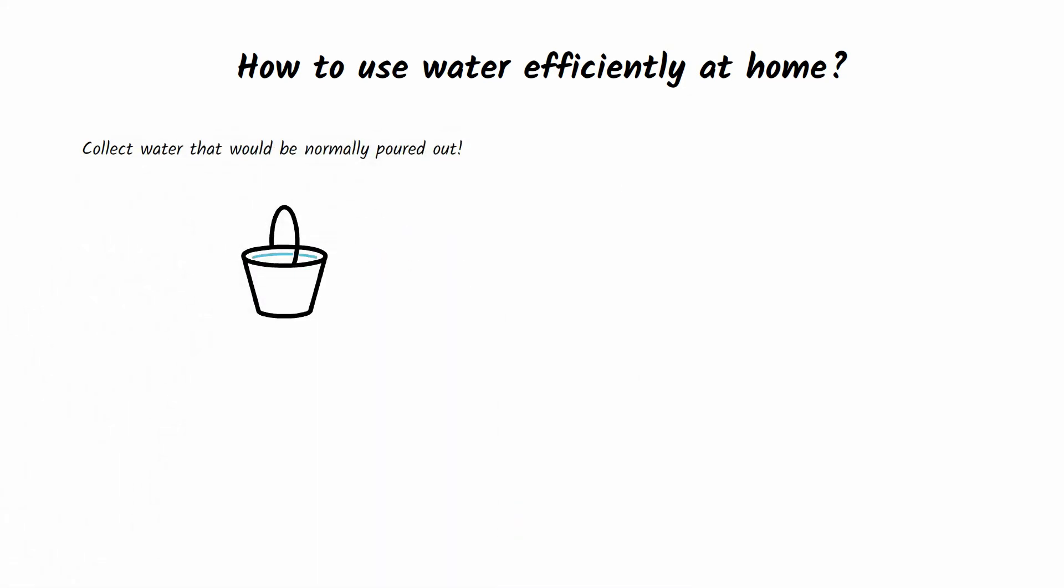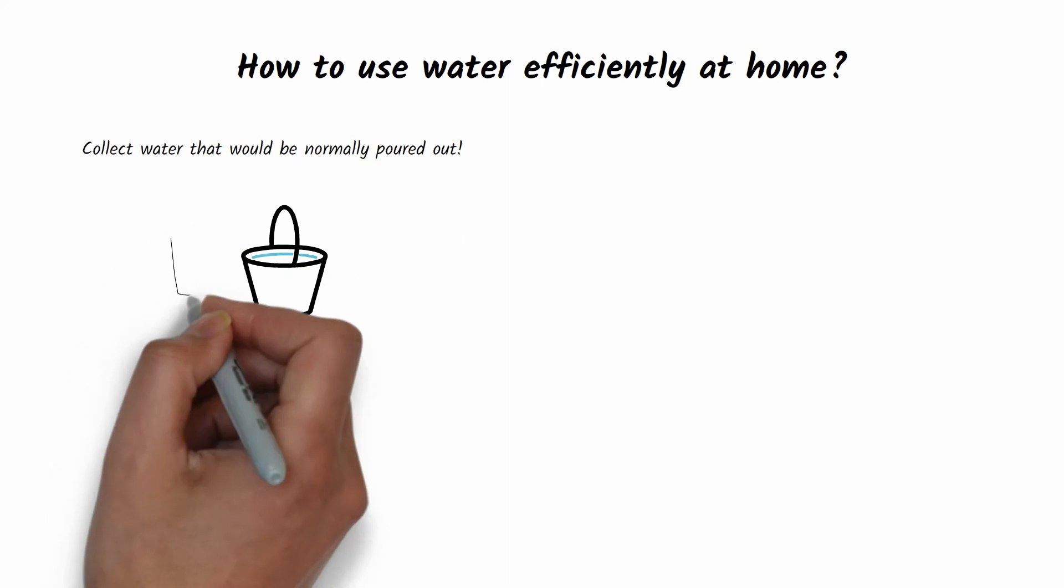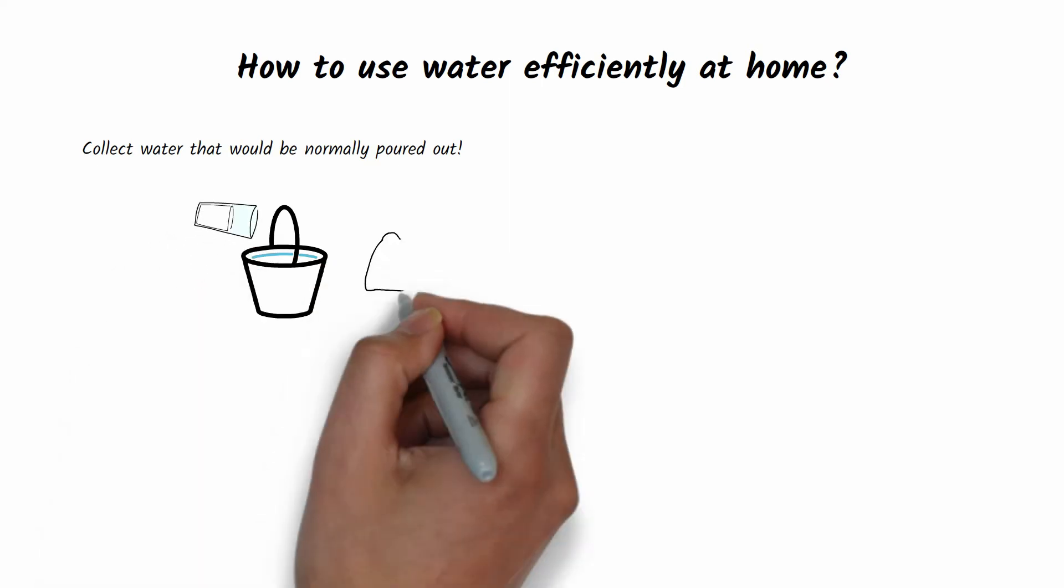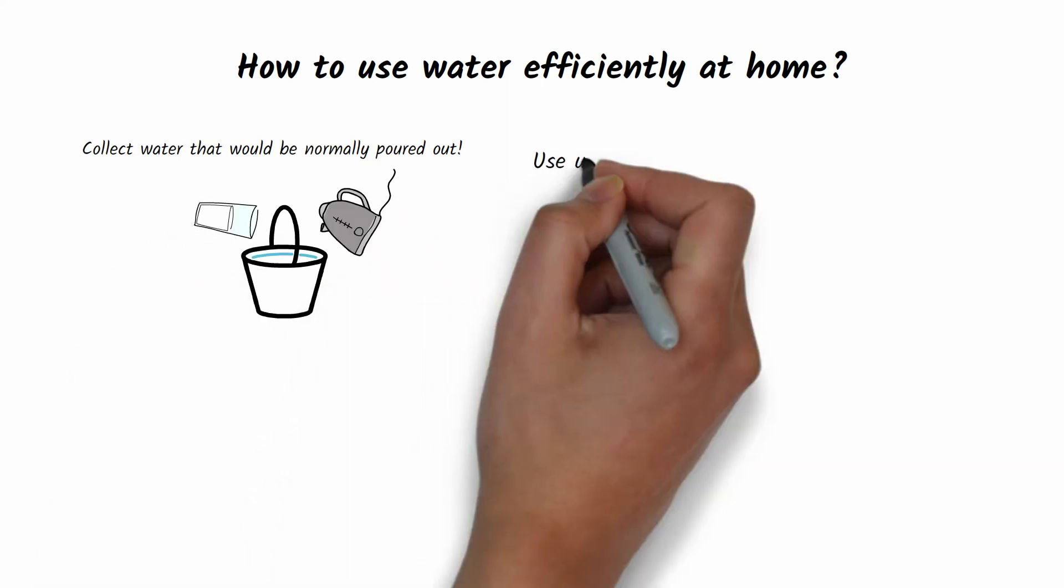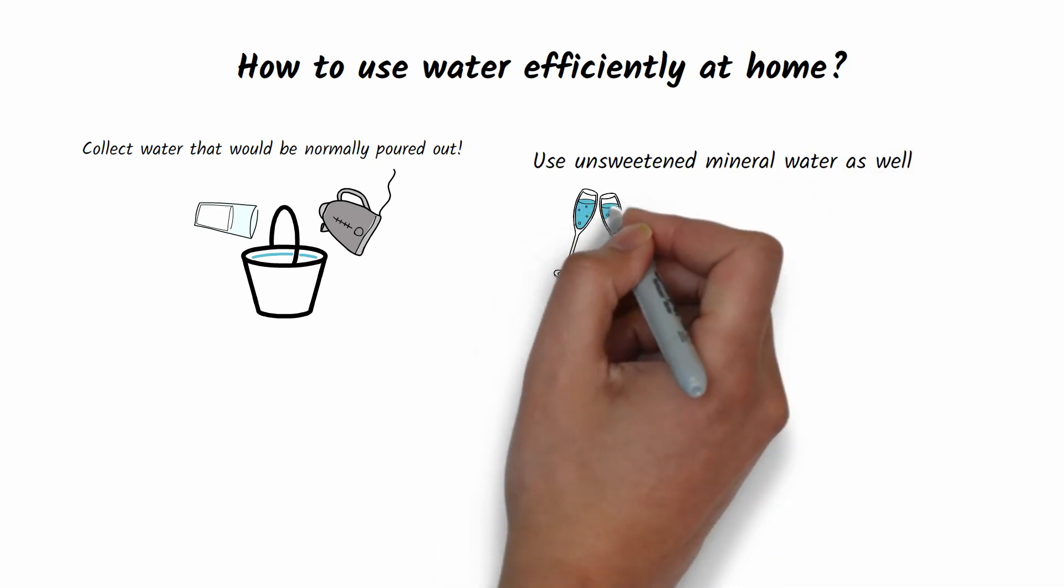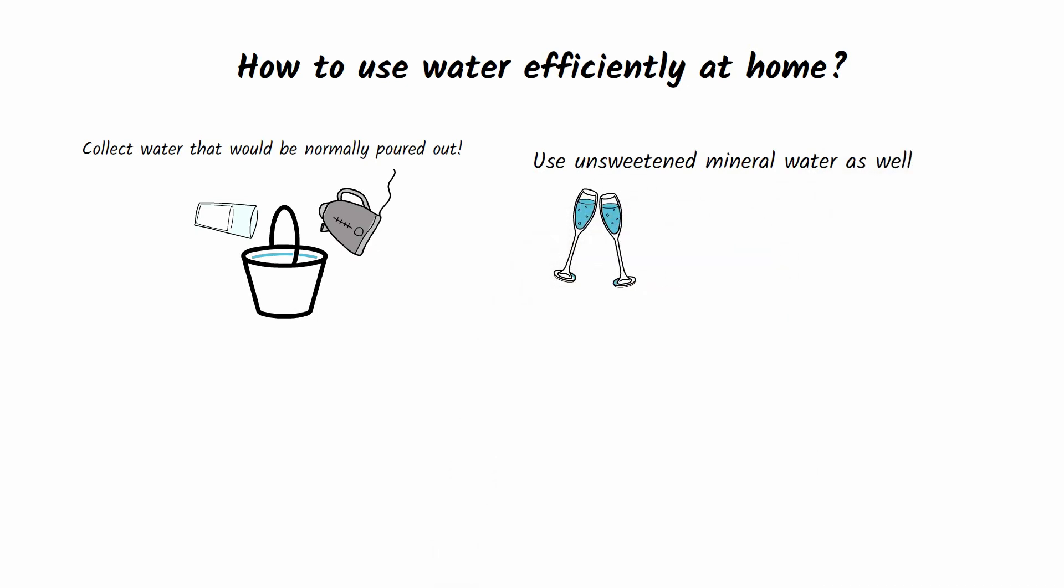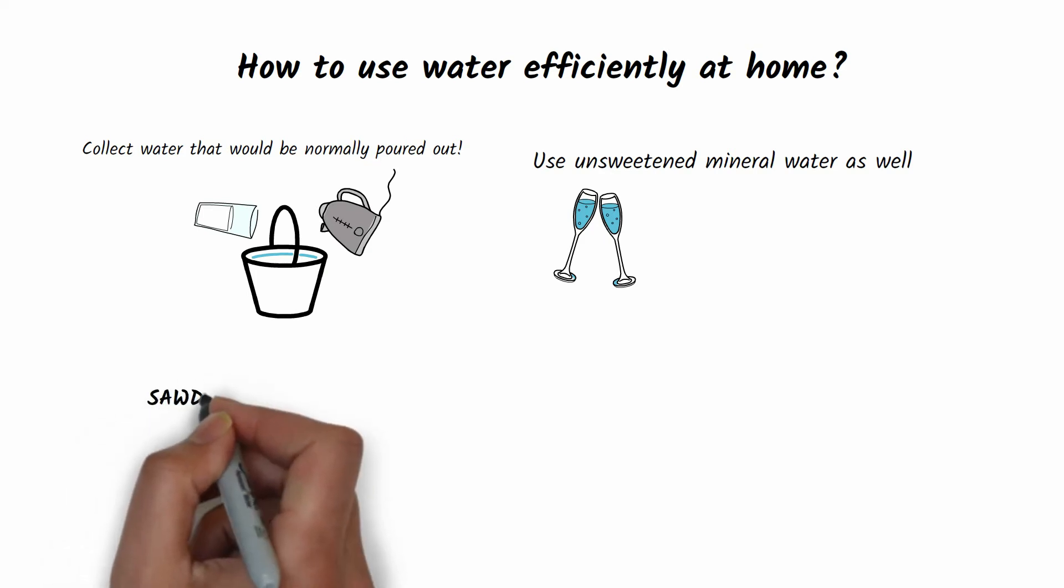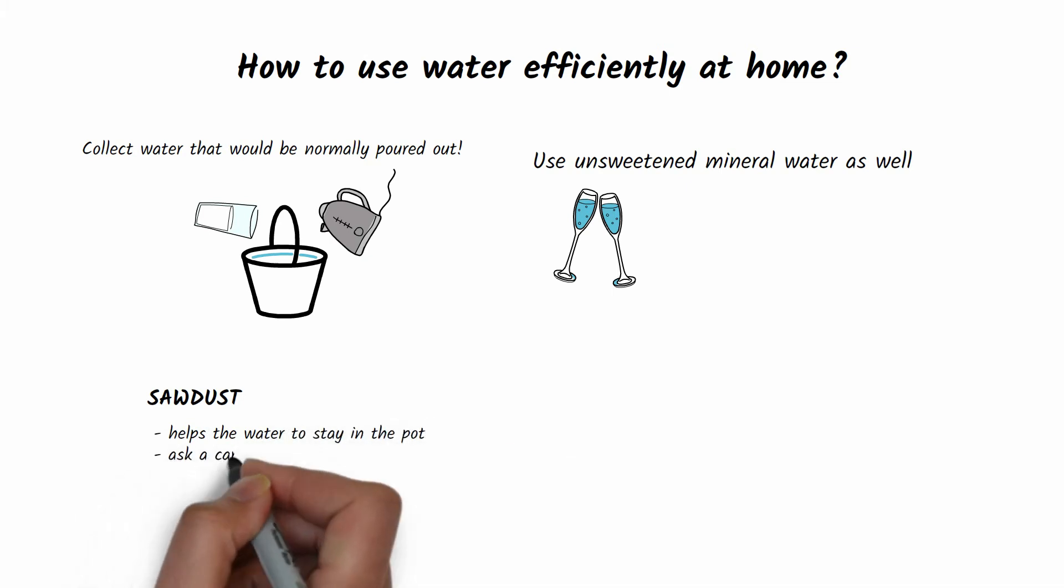How to use water efficiently at home: collect water that would otherwise be normally disposed of, for example water left over after a visitor or unused water from the kettle. You can also use unsweetened mineral water. It doesn't harm plants and can give them the minerals they need.